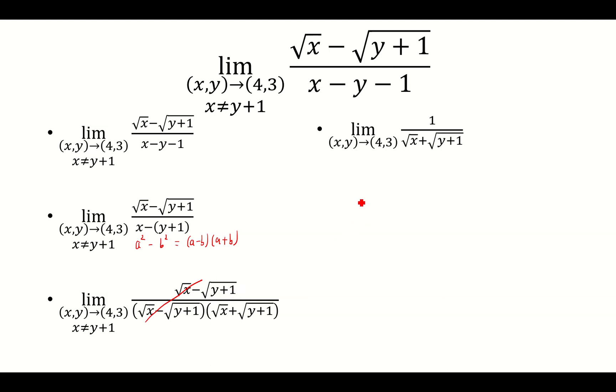I'm left with 1 over the square root of x plus square root of y plus 1. I plug in x equals 4, y equals 3, and get my limit to be 1 fourth.